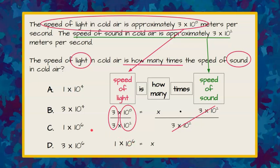And that tells us our answer is C. The speed of light is 1 times 10 to the 6th times the speed of sound.